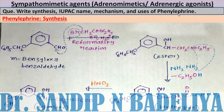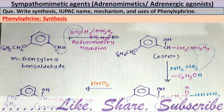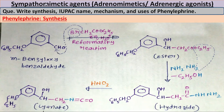Welcome dear friends. Today we will discuss synthesis of phenylephrine. This phenylephrine comes under the chapter sympathomimetic agents, which are also known as adrenomimetics or adrenergic agonists. In your examination, a question will be asked in this manner: write synthesis, IUPAC name, mechanism and uses of phenylephrine.